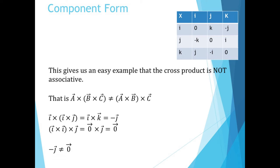Components also give us an easy example to show the cross product is not associative. If we consider i cross (i cross j) by performing the second cross product first, we get that i cross k equals minus j. However, if we perform the first cross product first, we get the zero vector cross j, which is the zero vector.